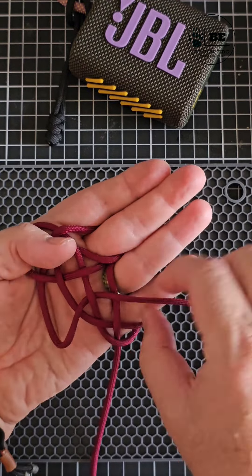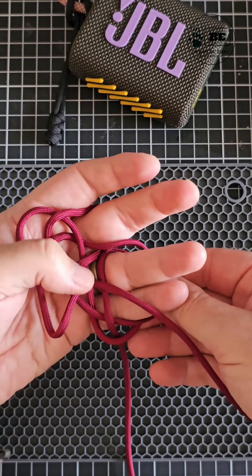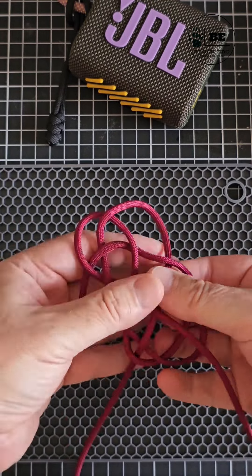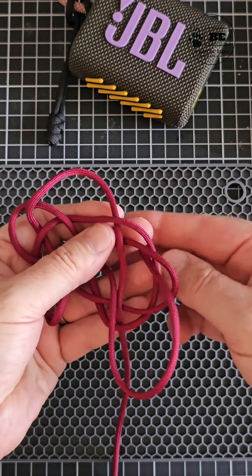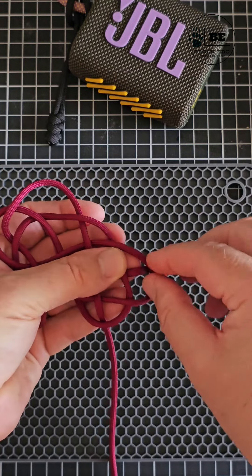Then gently remove the weave from your fingers. You're now going to go over the next strand and under the next and come back out through the front.